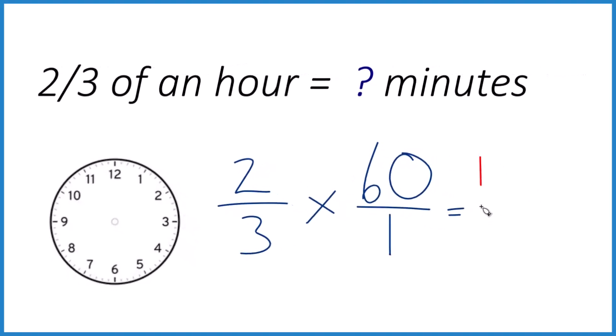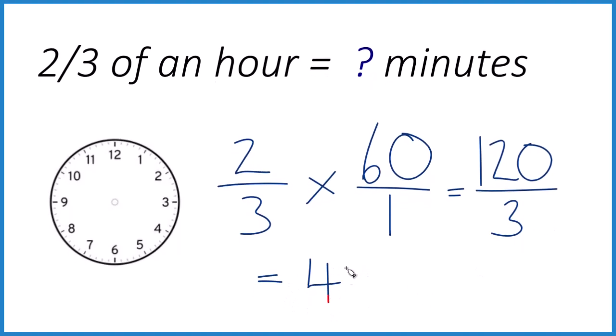Two times 60, that's 120, and three times one is three. If you divide 120 by three, you get 40, and that's 40 minutes.